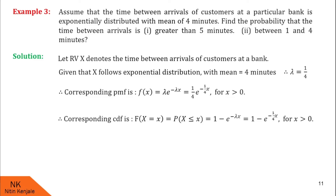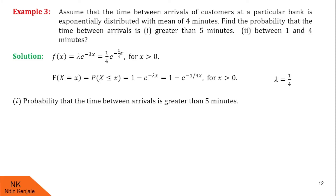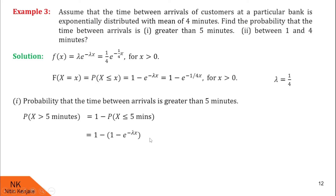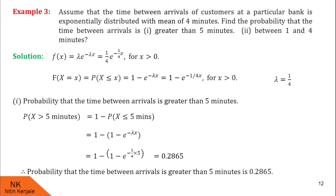Let us calculate the probability that the time between arrivals is greater than 5 minutes: P(X > 5). Using the complement formula: P(X > 5) = 1 − P(X ≤ 5). Using the CDF formula, P(X ≤ 5) = 1 − e^(−5 × lambda) where lambda = 1/4. After substituting values, we get P(X > 5) = 0.2865. Therefore the probability that the time between arrivals is greater than 5 minutes is 0.2865.